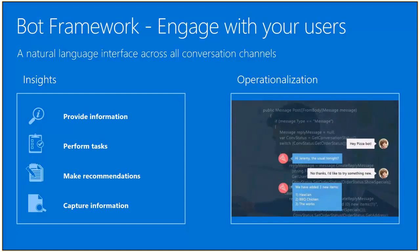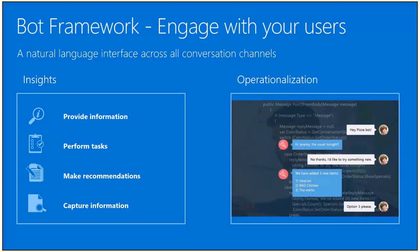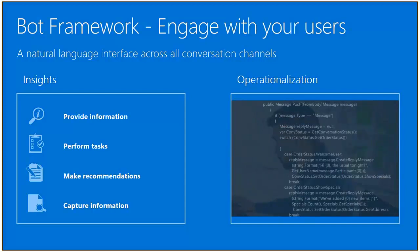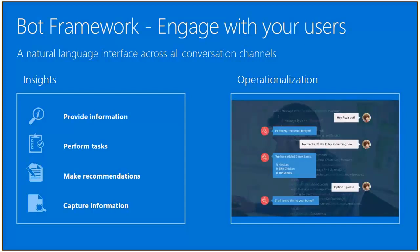In text and handwriting and voice, you want to put it all together and be able to interact with a person. One of the ways you can do that is with a bot. The Bot Framework allows you to have a natural language interface across lots of different communication channels. You can provide information to your users, do things based on what they tell you, order a pizza or whatever they need, make recommendations, and record interactions to derive patterns.